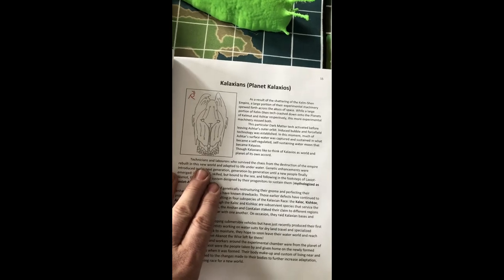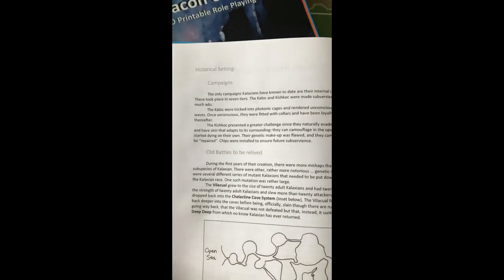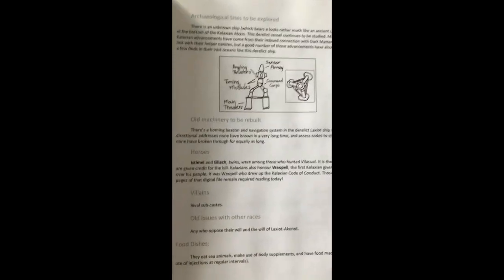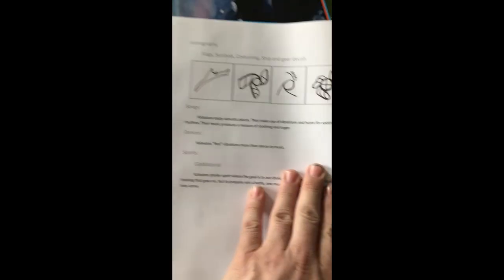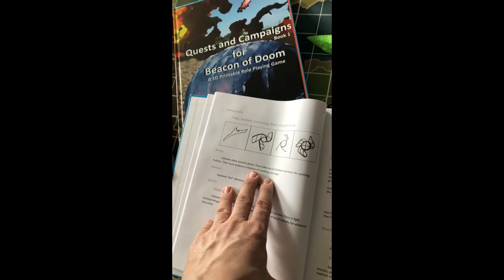Picture of what the alien looks like. Description of the alien. Historical setting. Historical campaigns, in other words. Old battles to be relived. Archaeological sites to be explored. Machinery to be rebuilt. Heroes. Villains. Food dishes. What do they like to use. Their language. Sample text. Punctuation. Pronunciation key. Number system. We have their icons. Their songs. Dances. Sports. I do actually plan on literally writing songs for each race. And it's not happening right now, but it will happen. Let me work on the third Quests and Campaigns book before I get to the songs. But they have some icons they use.